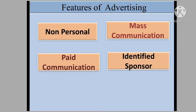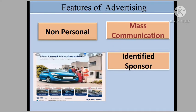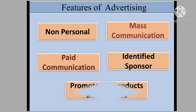Next, identified sponsor. Look at this advertisement — you can see a car being advertised. Who advertises this? You can see the name of the company just below: Hyundai. So we can identify the company with the advertisement; we know who is advertising — that is called identity, meaning we can identify the advertiser. Another feature of advertising is to promote the product and services so that the sales of the service or product increase.